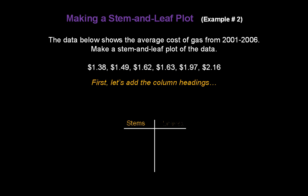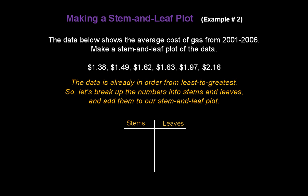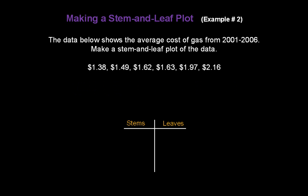Well, first, let's add our column headings: stems and leaves. The data is already in order from least to greatest for us, so we don't need to do that. Now we can just go ahead and break up the numbers into the stems and leaves and add them to our plot. We're going to take $1.38 and break it up between the 3 and the 8. That means the 13 becomes the stem and the 8 becomes our leaf.